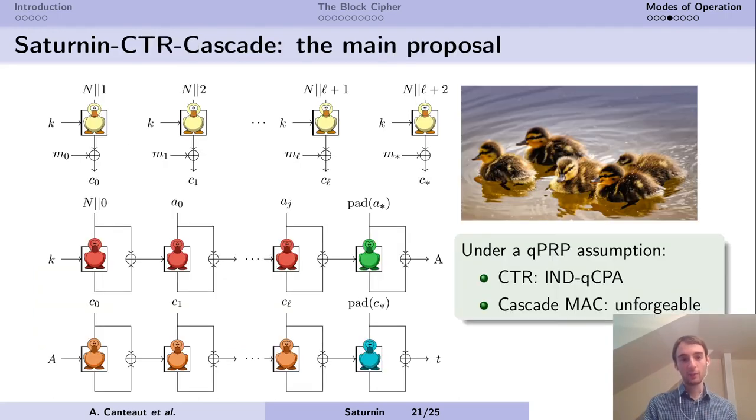Saturnin Counter Cascade is our main proposal. We combine, with the encrypt-then-MAC construction, the counter mode and a cascade MAC, which looks like NMAC or HMAC. In the counter mode, we simply concatenate the nonce and the counter and encrypt. In the cascade MAC, we use several different variants of Saturnin with different domain separators. We process the associated data, then process the ciphertext and produce a tag. Under an assumption that Saturnin is a quantum pseudorandom permutation, the counter mode is indistinguishable under quantum chosen message attacks, and the cascade MAC is also unforgeable. These are the security proofs from the literature.